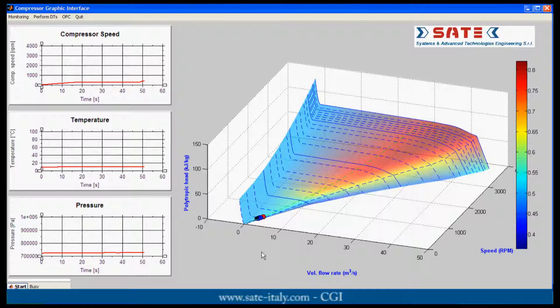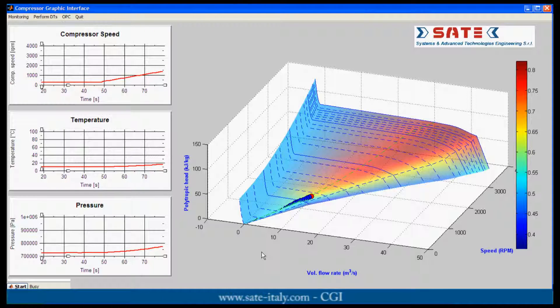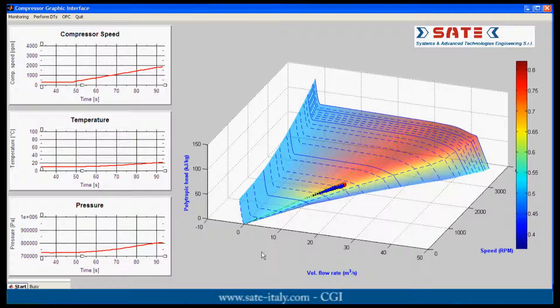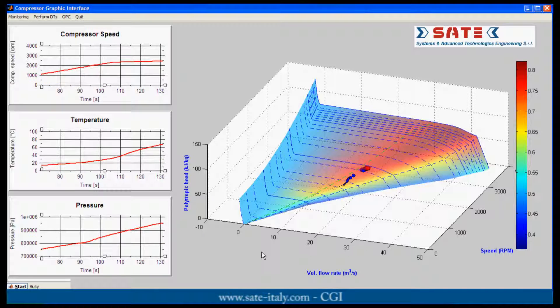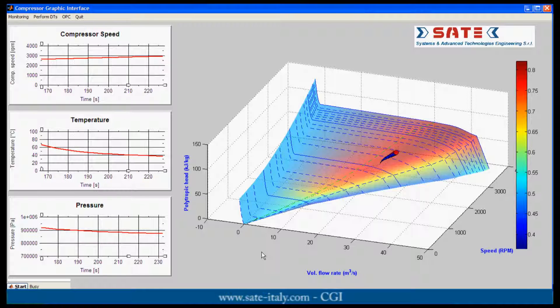The CGI receives the signals through the UDP connection and shows in real-time the operating point on the map. As you can see on the left, the compressor speed, the discharge temperature of the fluid, and the discharge pressure are displayed.